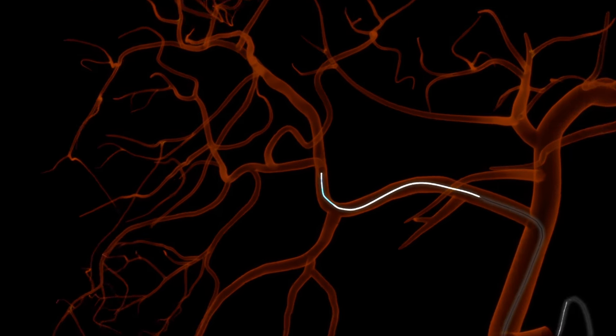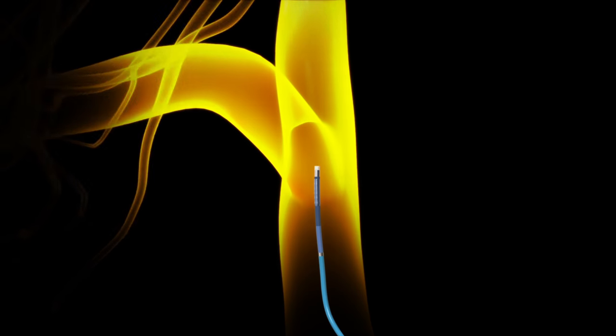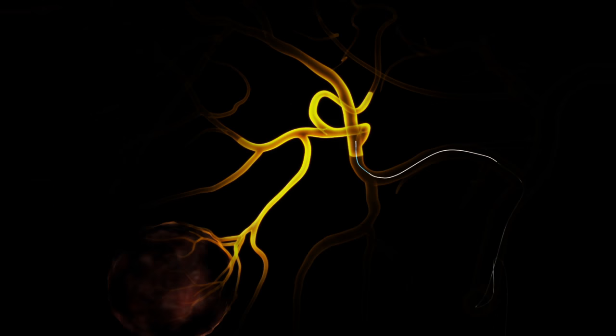The tip may be articulated to the same angle of the vessel branches to help direct the guide wire and Swift Ninja through the vasculature.